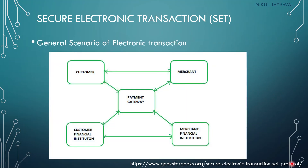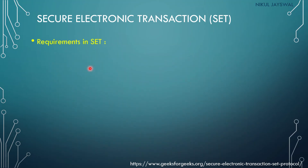In the general scenario of an electronic transaction, there is a customer, a merchant, and a payment gateway. The customer has their own financial institute and the merchant has their own financial institute. The payment gateway helps transfer money from the customer's financial institute to the merchant's financial institute, and security for all transactions is provided by Secure Electronic Transaction.